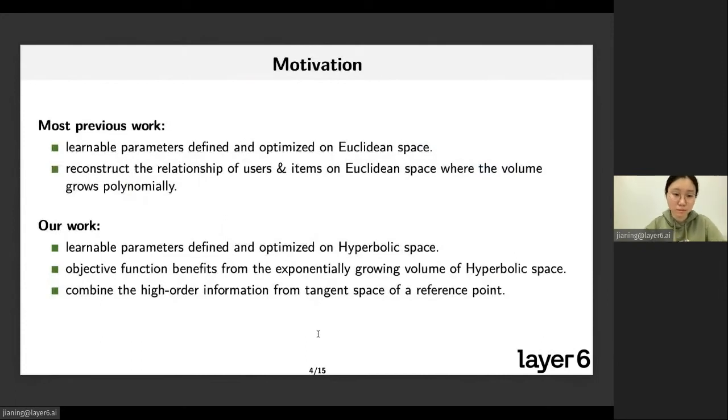Having the key components in mind, I will now talk about the motivation of our work and the differences between our work and previous work. Most previous work has the embedding parameters defined and optimized in Euclidean space. When it comes to positioning the learned user-item embeddings in the space, the volume of Euclidean space grows polynomially in that case.